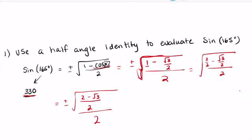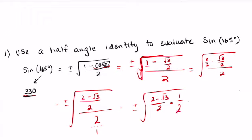Continue on simplifying: 2 over 2 minus that gives me 2 minus root 3 over 2. At this point, I've got to utilize keep, change, flip. I have 2 minus root 3 over 2 and then times 1 over 2. That gives me plus or minus the square root of 2 minus root 3 over 4.